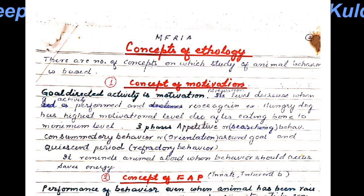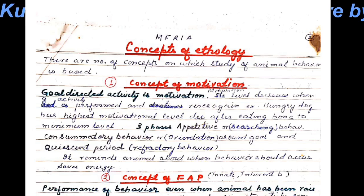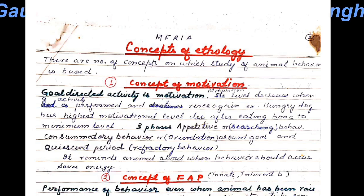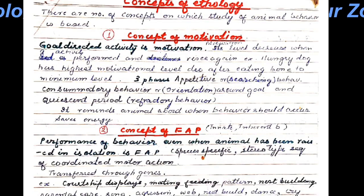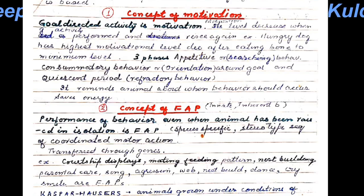The consummatory phase is the behavior pattern that occurs in response to a stimulus, and after getting this stimulus, a sense of satisfaction is achieved. For example, after searching behavior, if prey is found, the animal eats the prey, drinks water, or finds a mate and mating is performed.